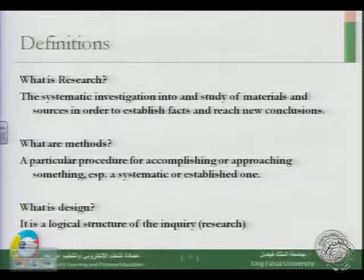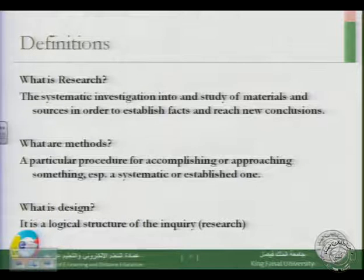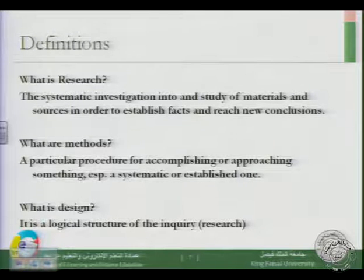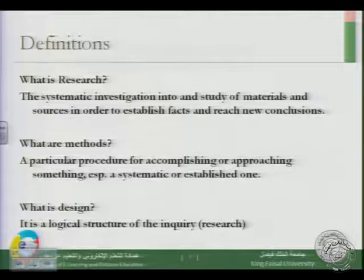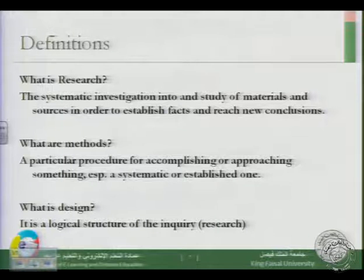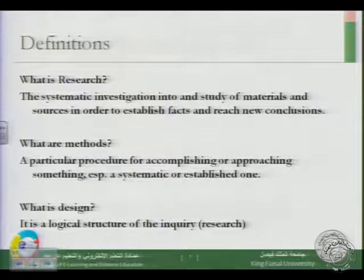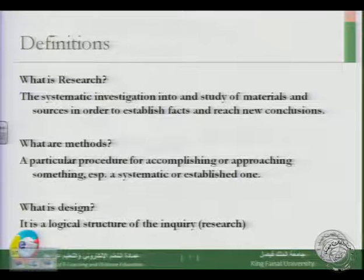We can get facts, conclusions, and solutions to our problems through collecting materials and data from different sources — that is research. But how do we do it? There are different methods. A method is a particular procedure for accomplishing or approaching something — a systematic or established one. So a method is a procedure or approach that leads us somewhere. We will look at some research methods shortly. Design is different — it is the logical structure of the inquiry.